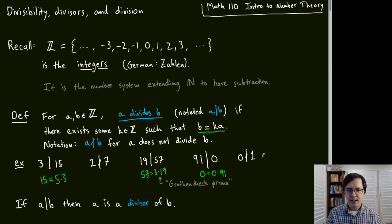Also, 0 does not divide 1. This would require solving 1 = K × 0, but everything times 0 is 0, and 1 is not 0.